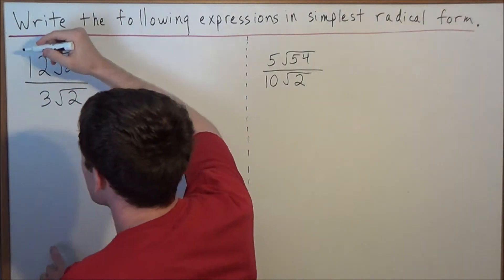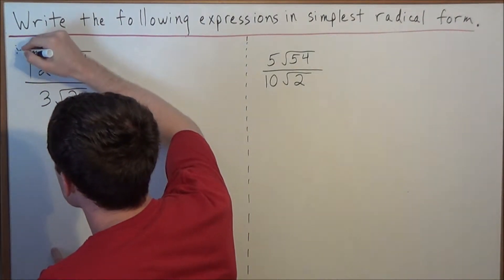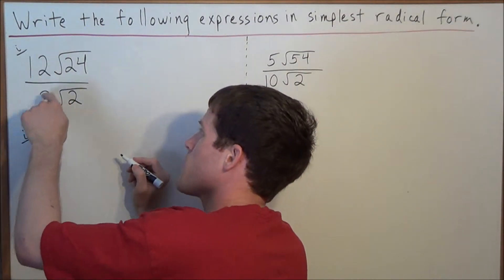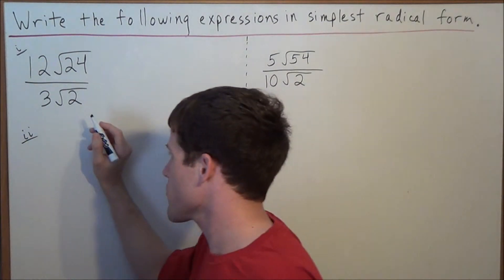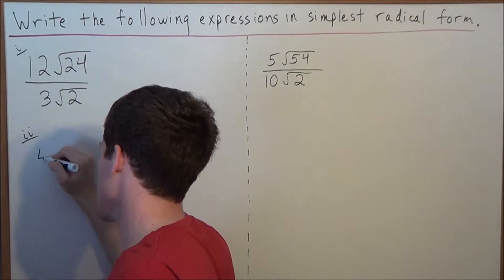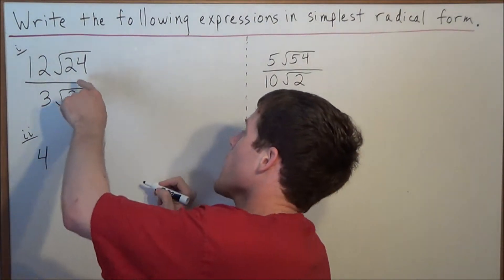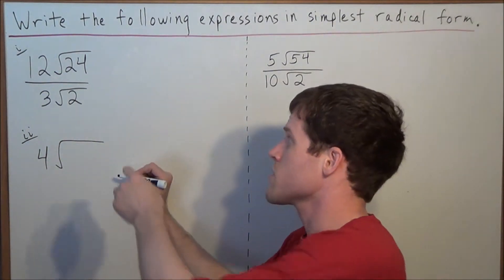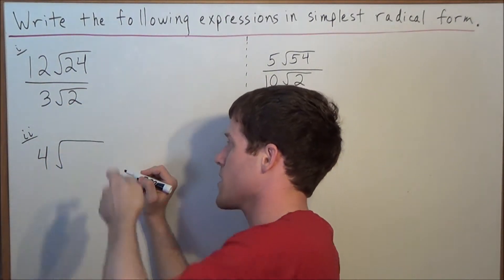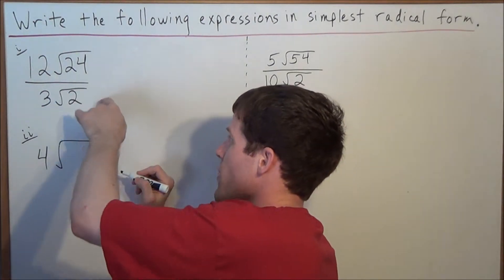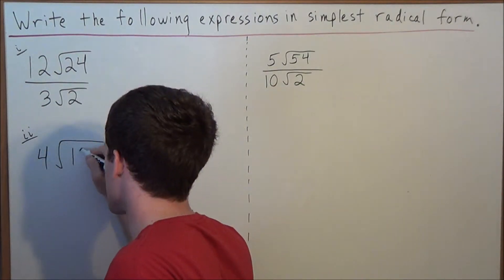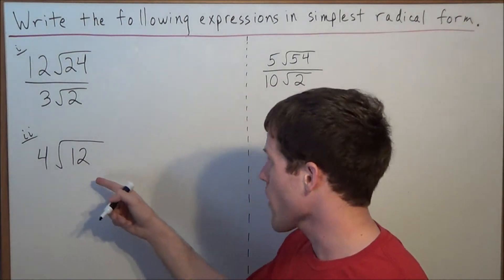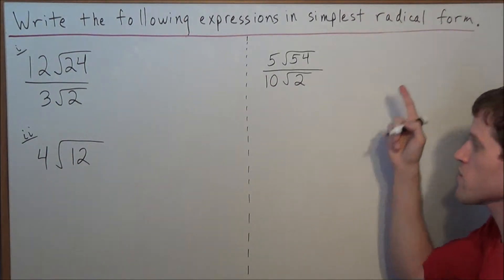So if we call this step 1, for step 2, notice we're doing 12 divided by 3 because those two numbers are outside the radical. And 12 divided by 3 is 4, and now we're going to divide the numbers inside the radical and we keep the radical symbol there since those numbers are in fact inside the radical. So we're doing 24 divided by 2 is 12. And now it's tempting to stop here, but remember we always need to look at the radical and see if it's in simplest radical form.